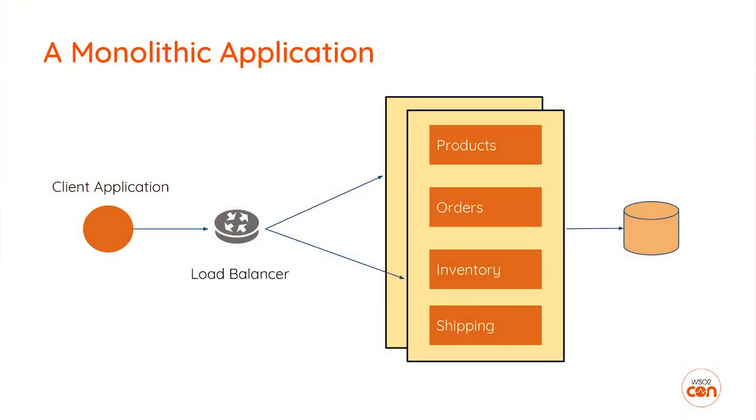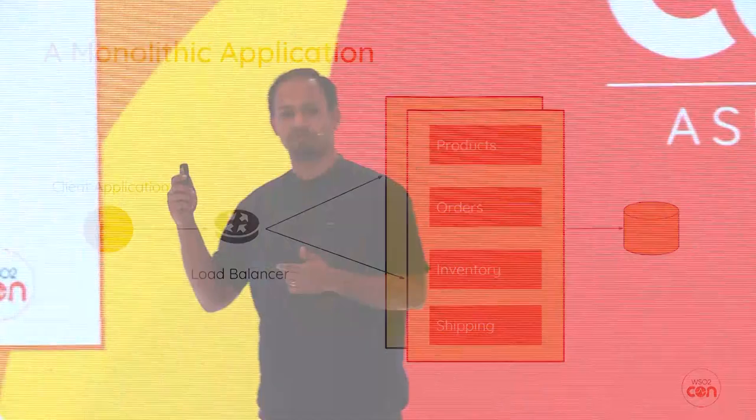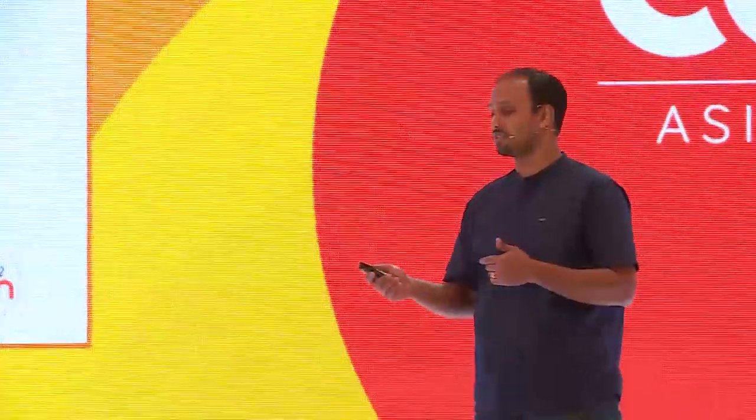If you look at a typical monolith application — this is a picture of a typical monolith retail website — you'll have functions performing operations on your product catalog, functions to make and cancel orders, and functions for updating your inventory. In a typical monolith application, all of these will be bundled into a single execution runtime.